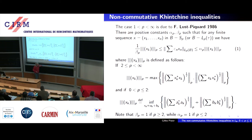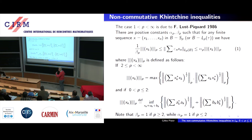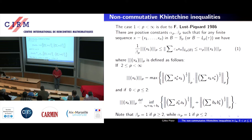For P < 2 we cannot avoid the same complication even in the self-adjoint case. The max of two terms becomes an infimum over all decompositions of the sequence X_K as a sum of two terms, controlled: the first by the usual square function and the other by the square function of the adjoints. Alternatively, one could write it with A_K + B_K* and one norm — it is a matter of taste.